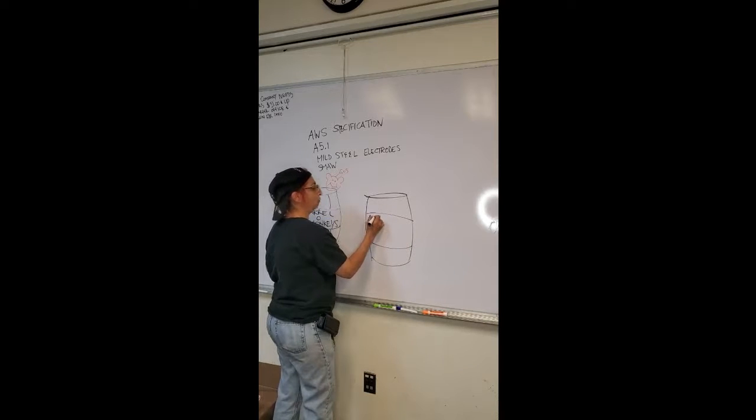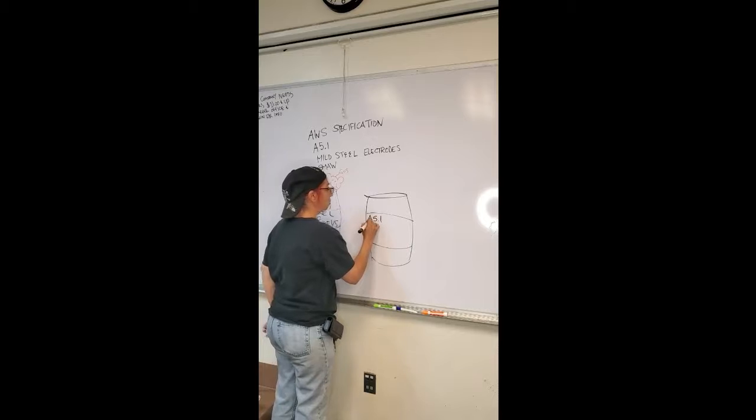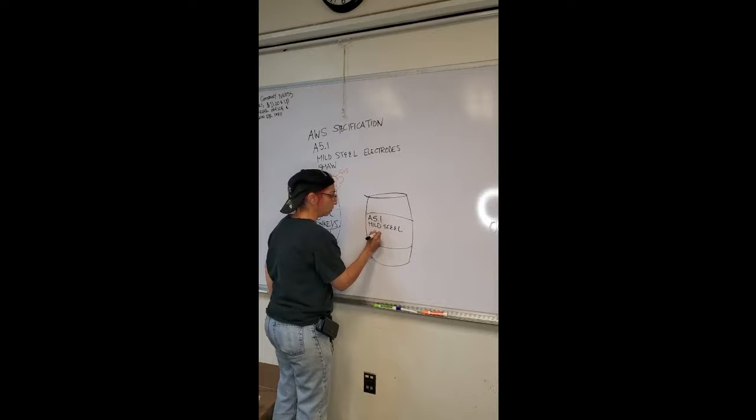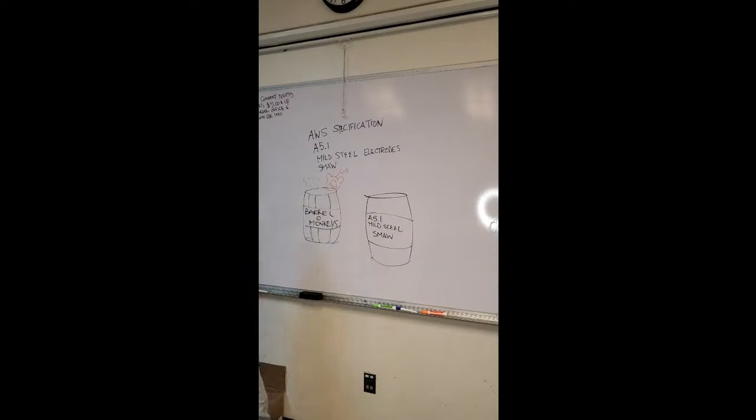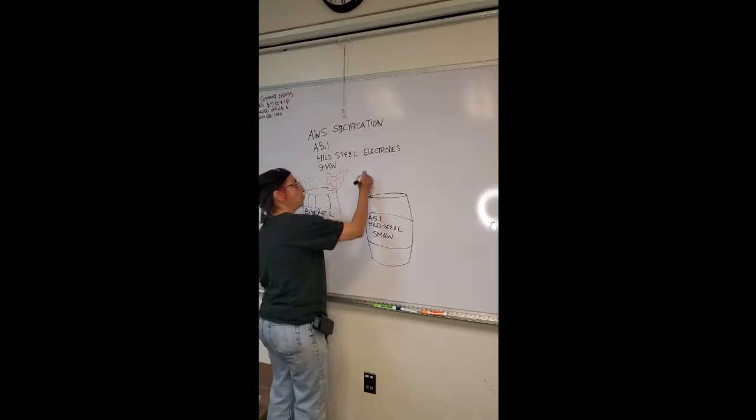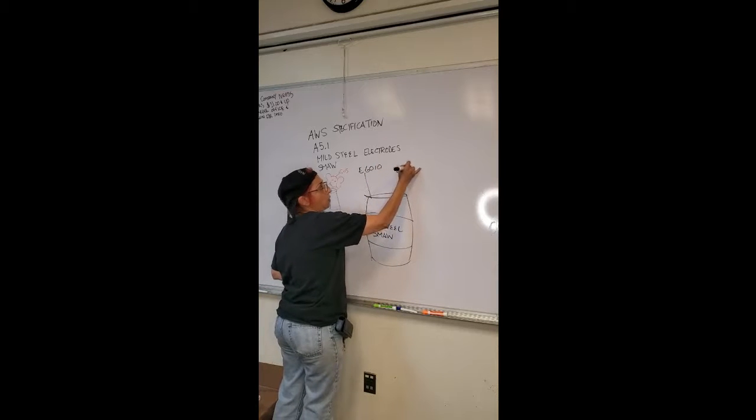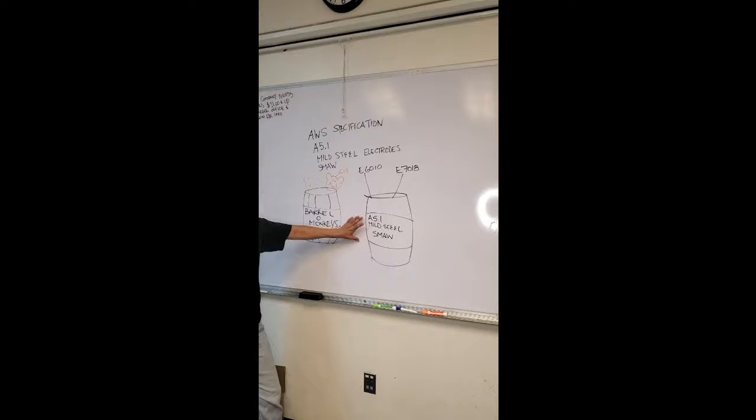Now here's my barrel again, except this one says A5.1, and this is mild steel electrodes for SMAW. Now what's inside the barrel? Mild steel electrodes. Now what are their names? E6010, E7018. This is the specification, this is the classification. Does that make sense?